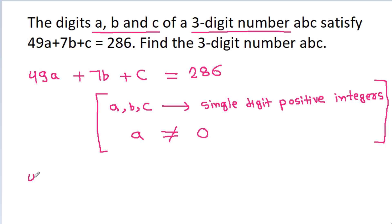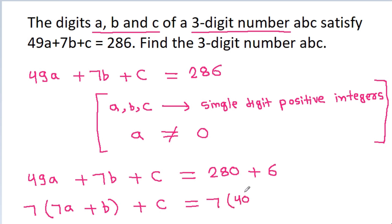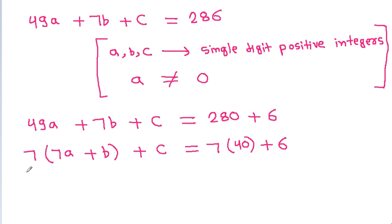Now, 286 can be written as 280 plus 6. We can take 7 common, giving us 7 times the quantity 7a plus b, plus c equals 7 times 40 plus 6. Since 7 times (7a plus b) is a multiple of 7, and 7 times 40 is also a multiple of 7, c must be equal to 6.